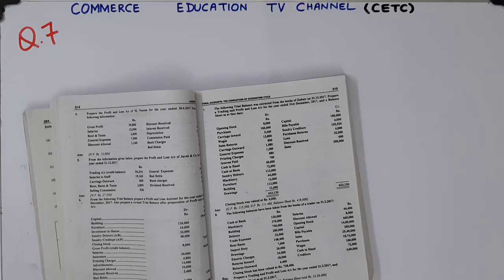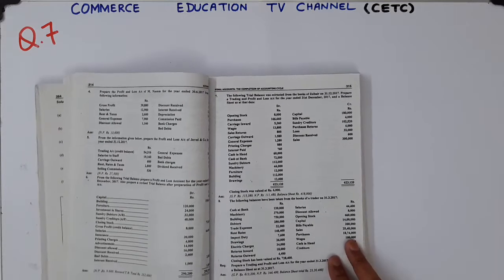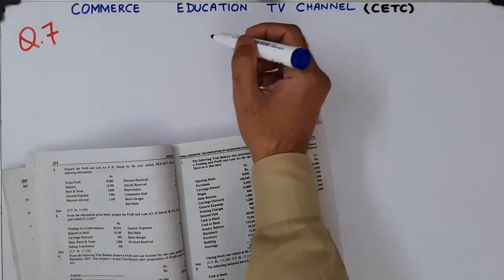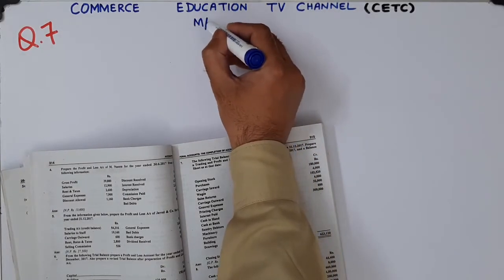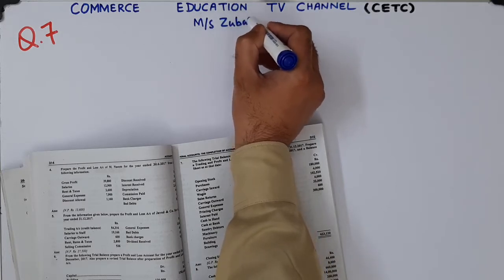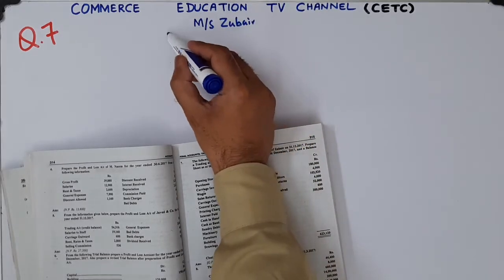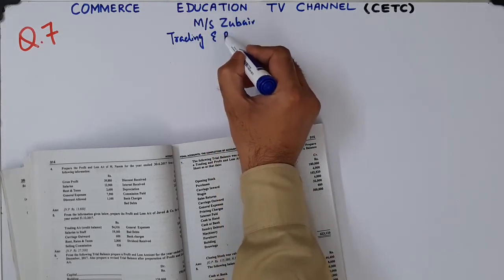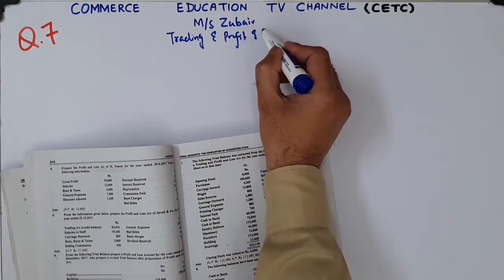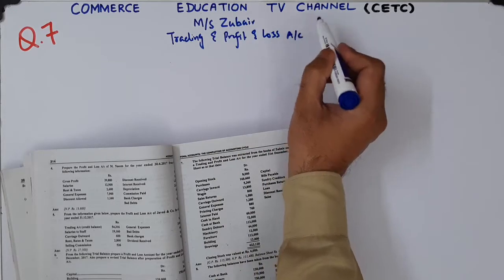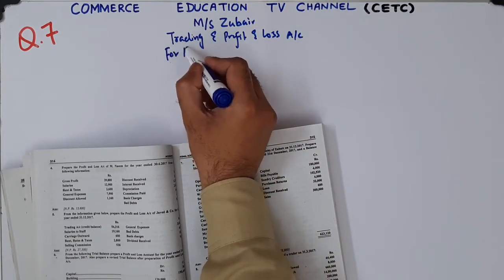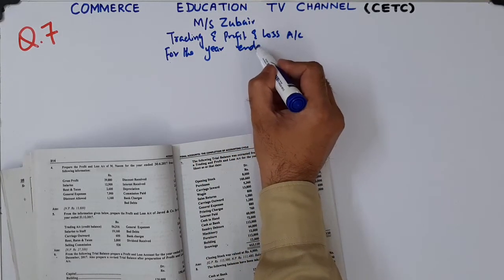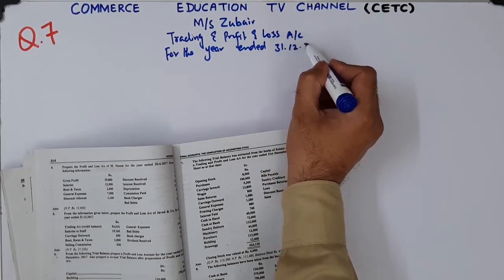This is the first question in which we have been asked two things — the trading and profit and loss account, and the balance sheet. First of all, we have written the business name: Master Zubair. Then we write the statement name: Trading and Profit and Loss Account. And the period: for the year ended 31st December 2017.